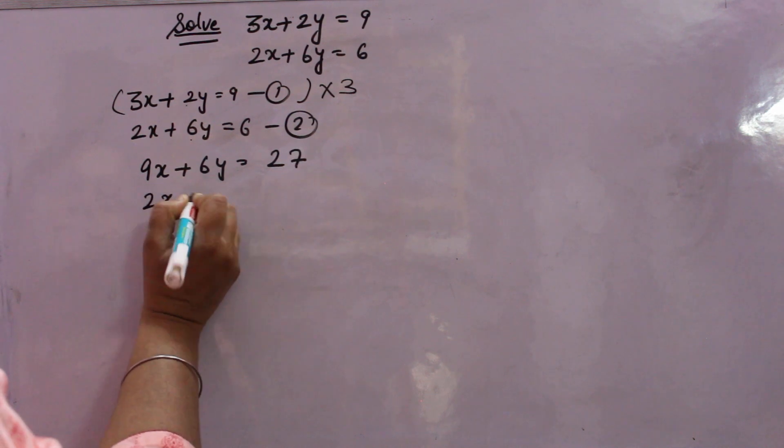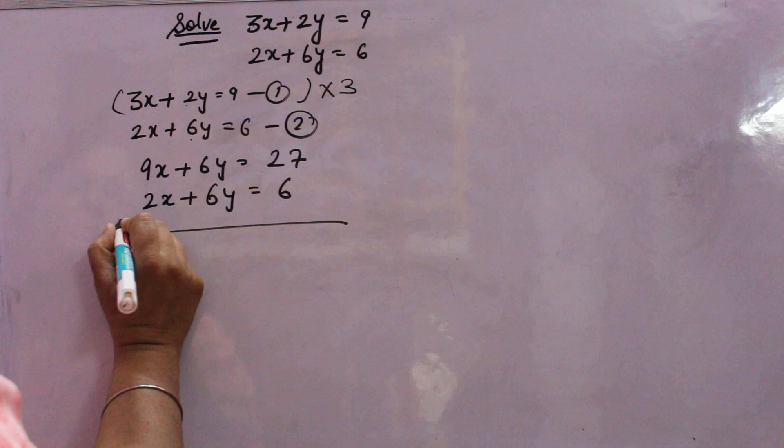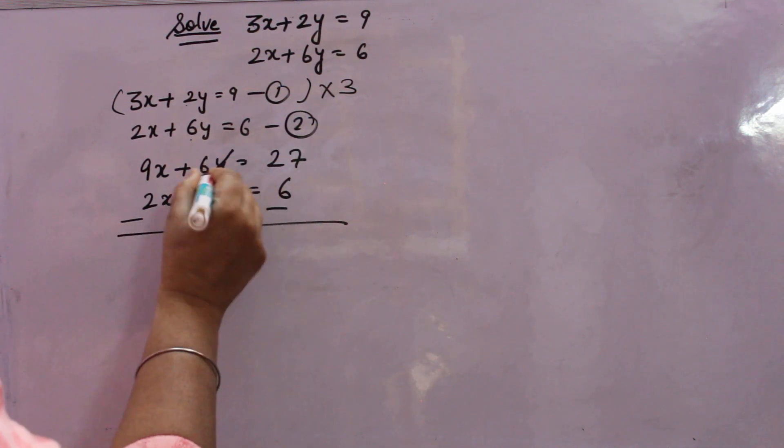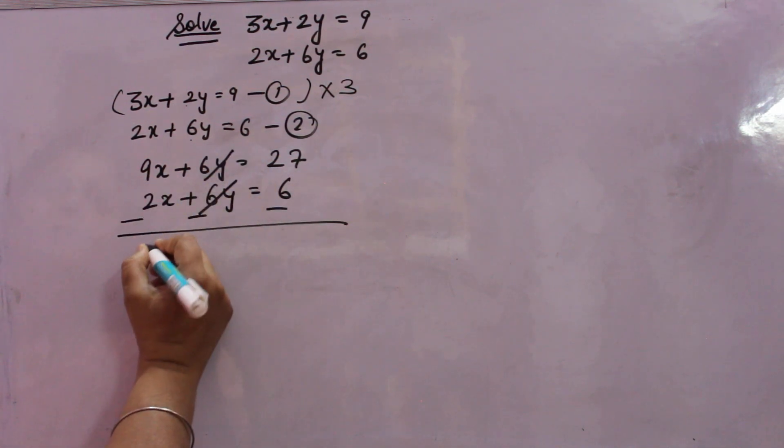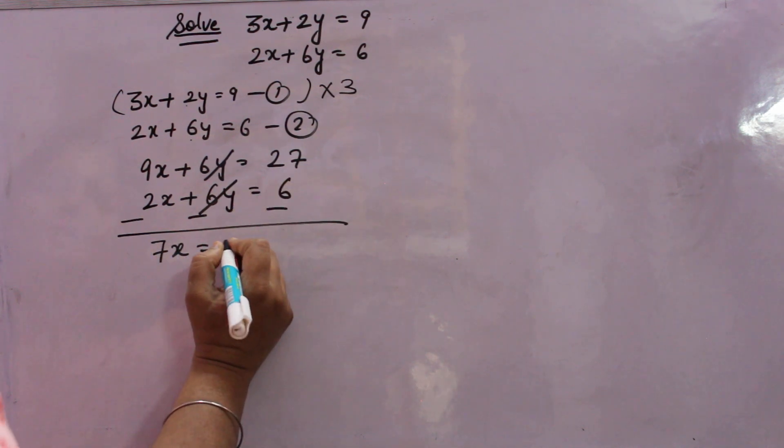First equation, second is as it is you will write. Second equation, then you subtract. This will be cancelled. Now, 9 minus 2 is 7x is equal to 27 minus 6, 21.